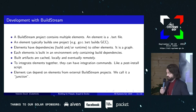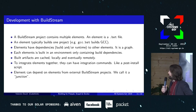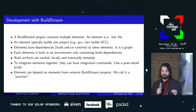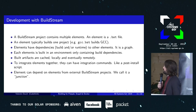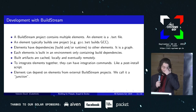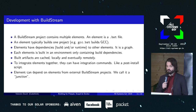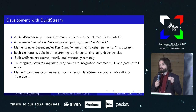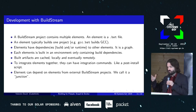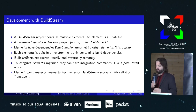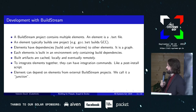In Buildstream, you have a project with lots of elements. Every element represents one piece of software — for example, an element for GCC, one for binutils, one for Mesa drivers. Elements have dependencies between each other: build and runtime dependencies, forming a graph which can be quite big. This is used to build an environment for every step. For example, if you want to build GCC, you need binutils as a build dependency, and Buildstream makes an environment where it puts binutils for you. You'll probably also need another GCC to build GCC.